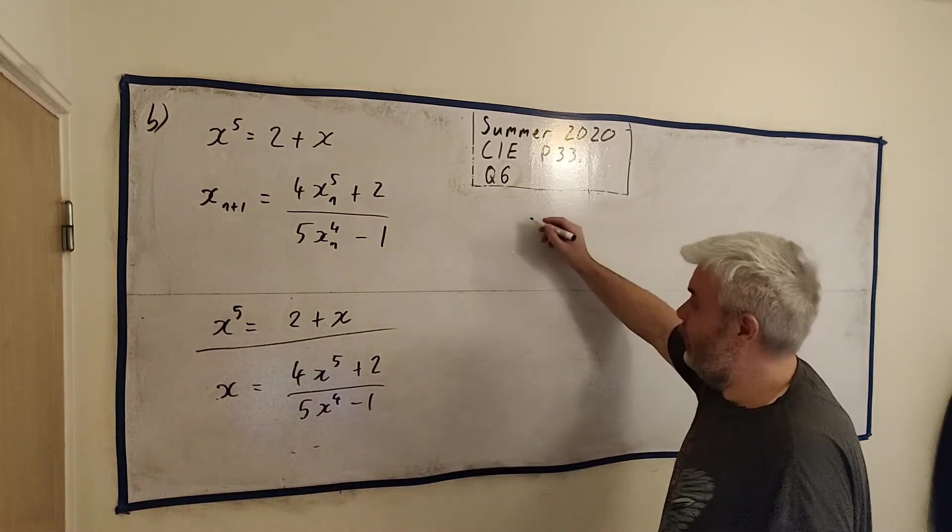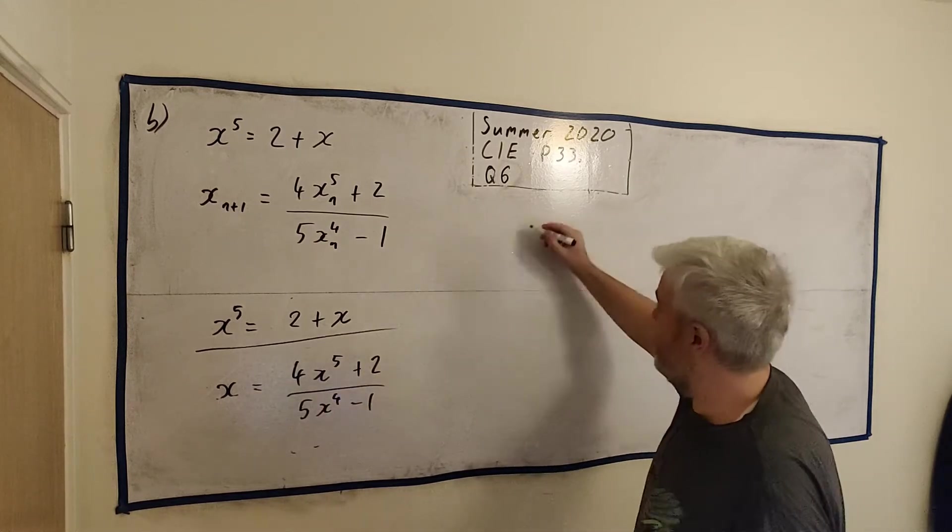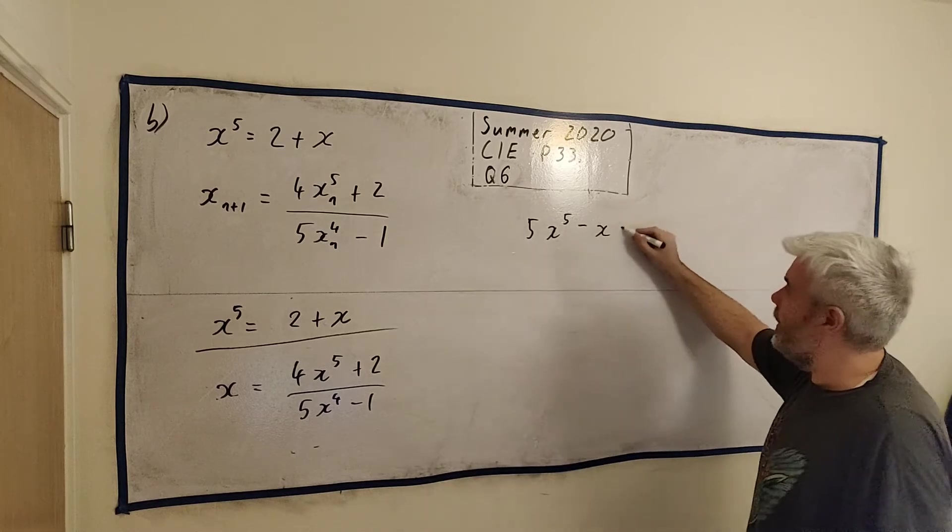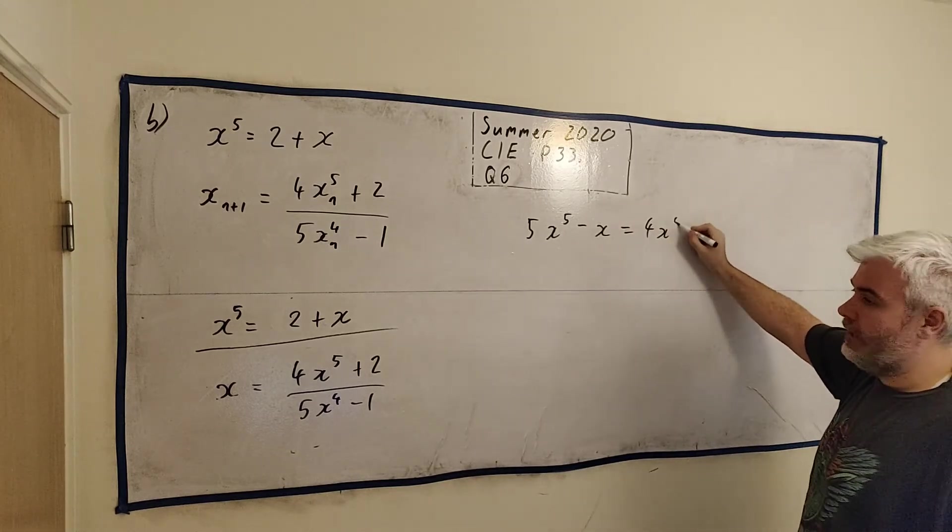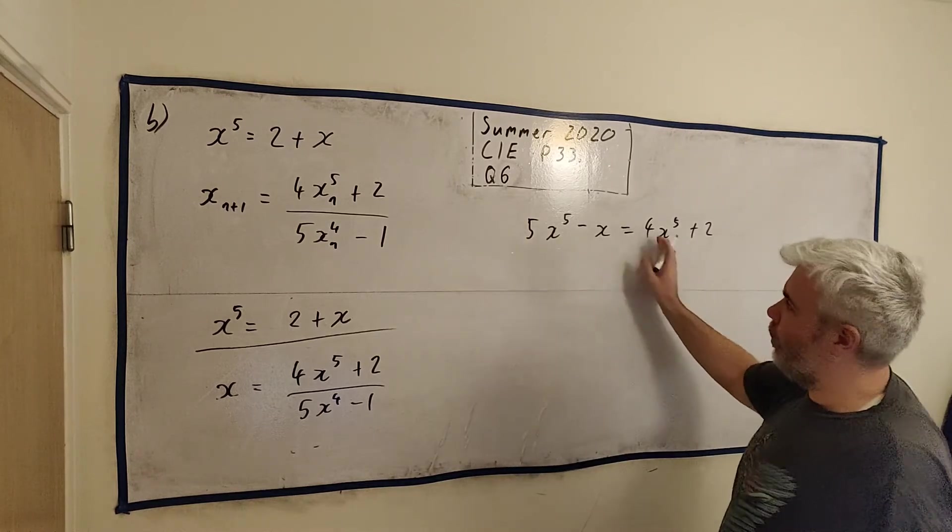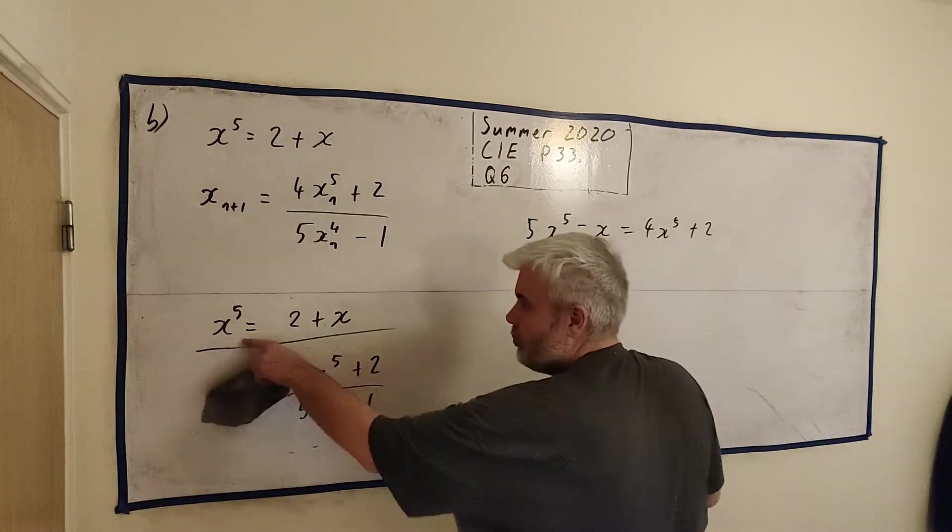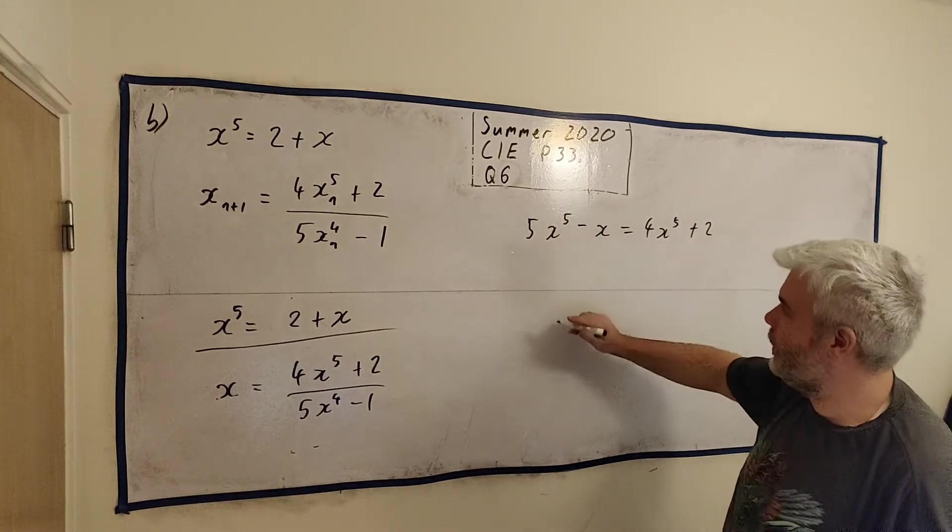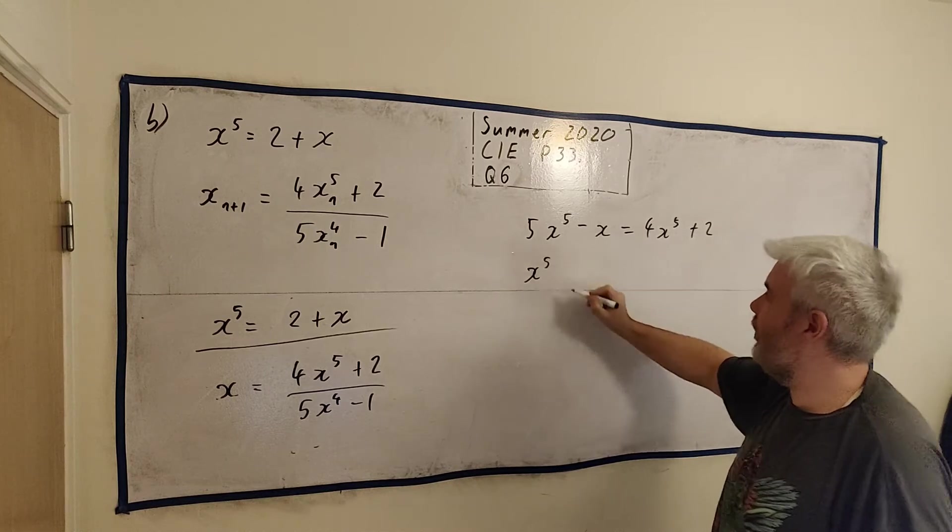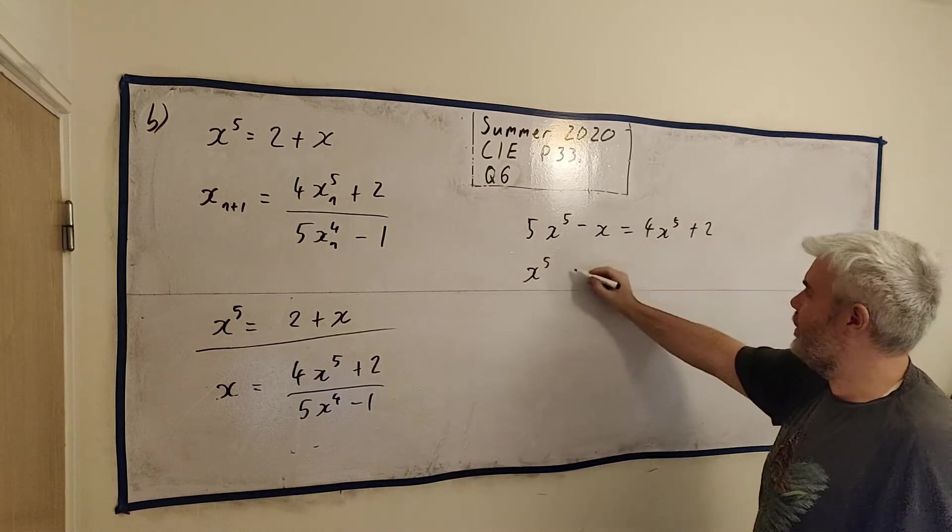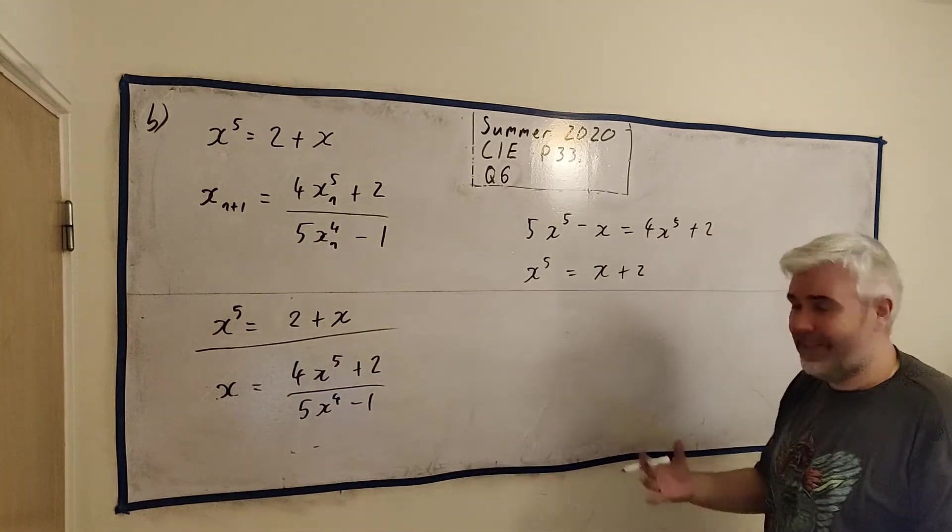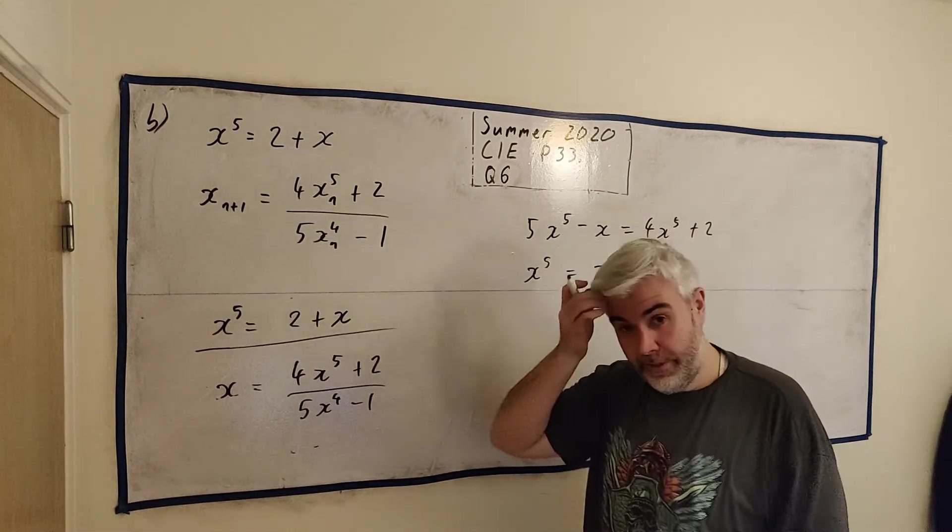Multiply across by here, we'll get x times this is 5x to the power of 5 minus x equals 4x to the power of 5 plus 2. Let's get all the x to the power of 5s on the left, just like what we're trying to make it look like. So we'll take this one across, 5 minus 4 is just 1x to the power of 5. Take this one over this side, equals x plus 2, and that's it, we're finished. It was just that easy to show that this is equal to this.